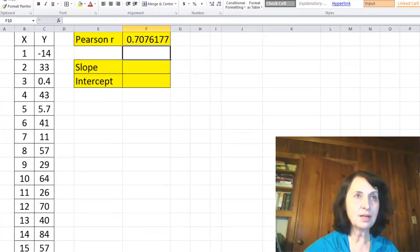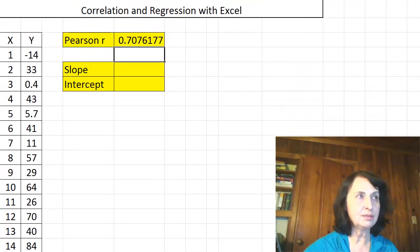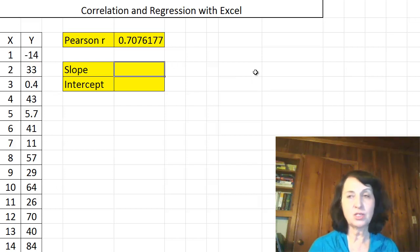And this is Pearson R calculated real fast with the formula Pearson. The data for X, the data for Y, and we can see that there is correlation evidently. 0.7 is a serious correlation.